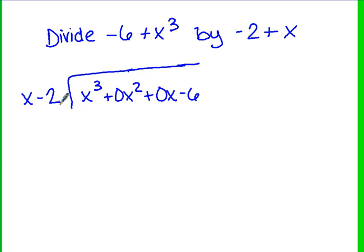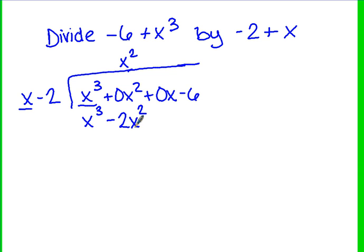Now we start the division process. Compare first terms: what times x gives x³? That's x². Write x² in the quotient above the x² term. x² times x is x³, and x² times -2 is -2x². That's why it's important to have the x² term in the dividend — so you have something to subtract it with. Subtract, changing all signs: x³ - x³ is nothing, and 0x² + 2x² is 2x². Bring down the 0x term.